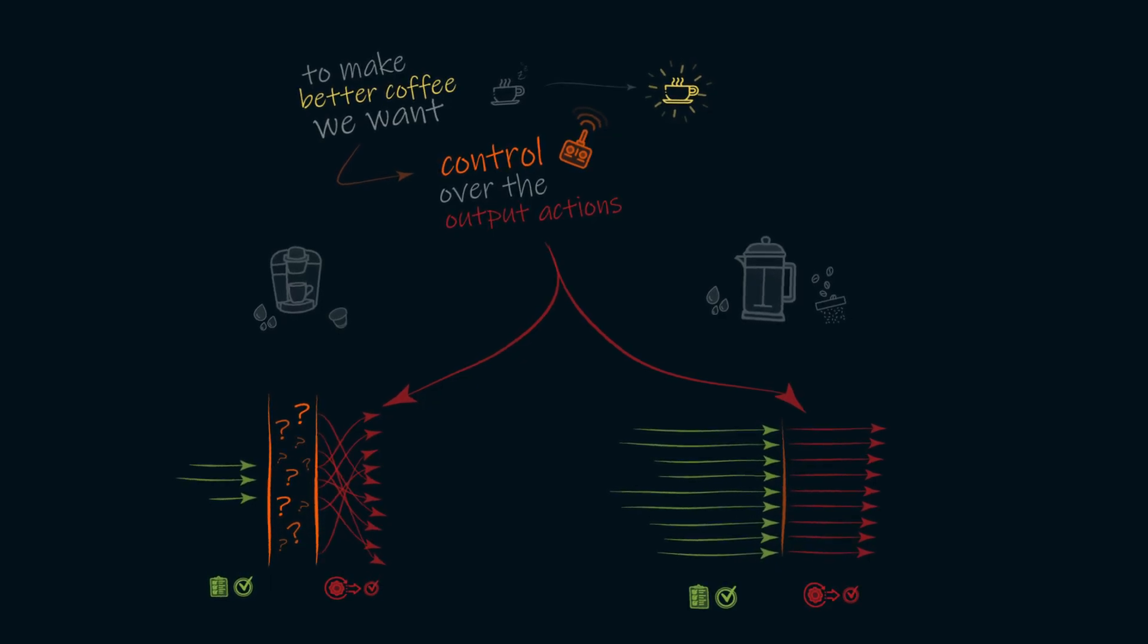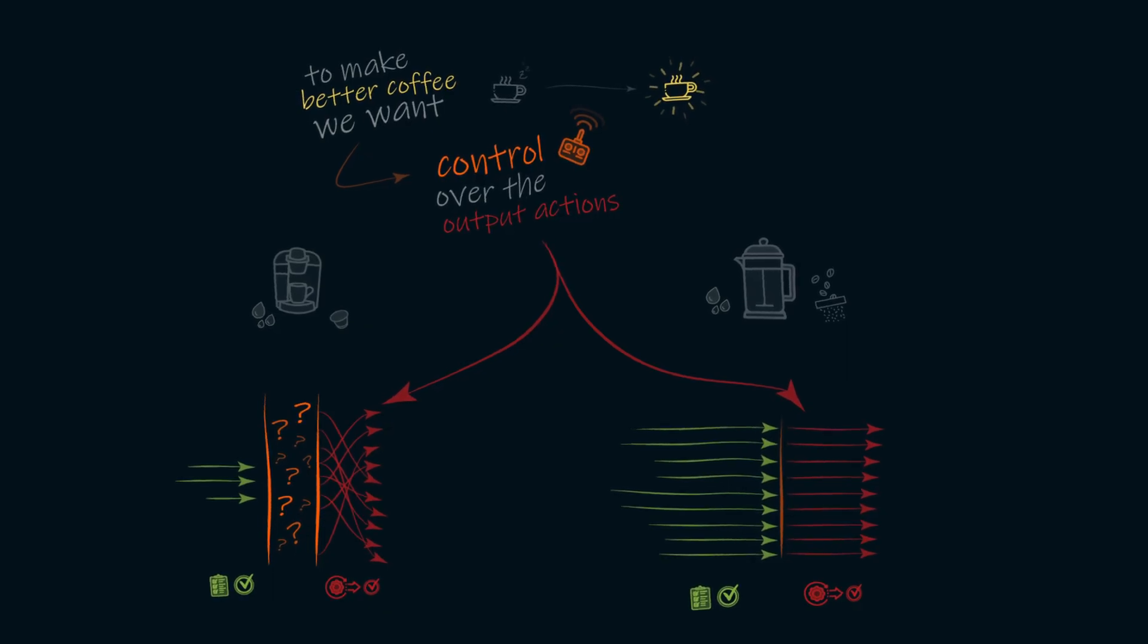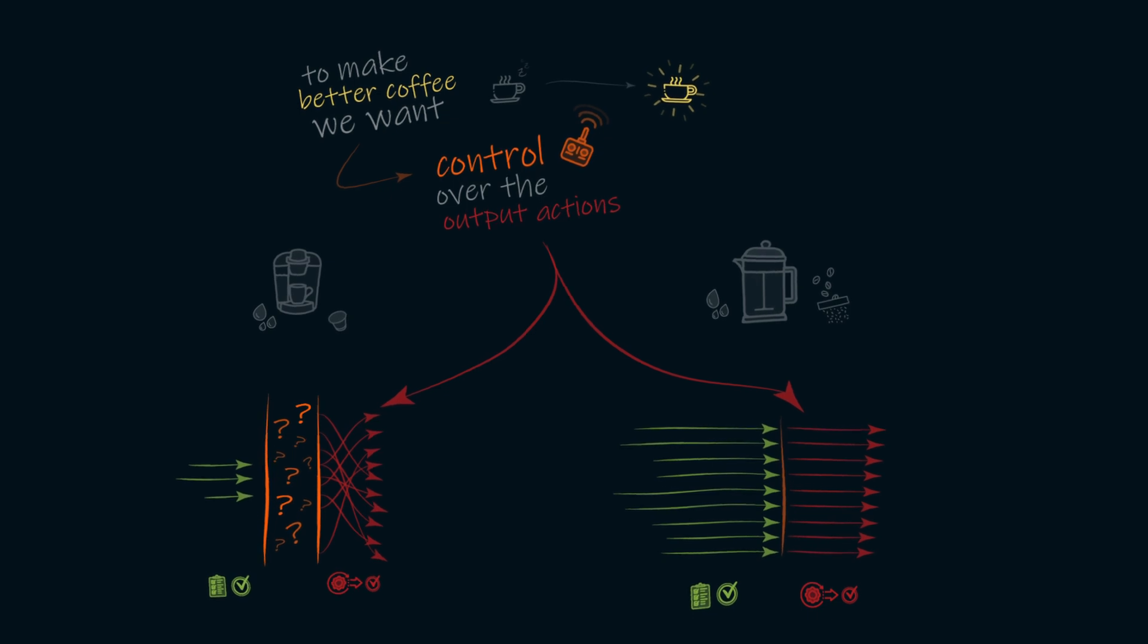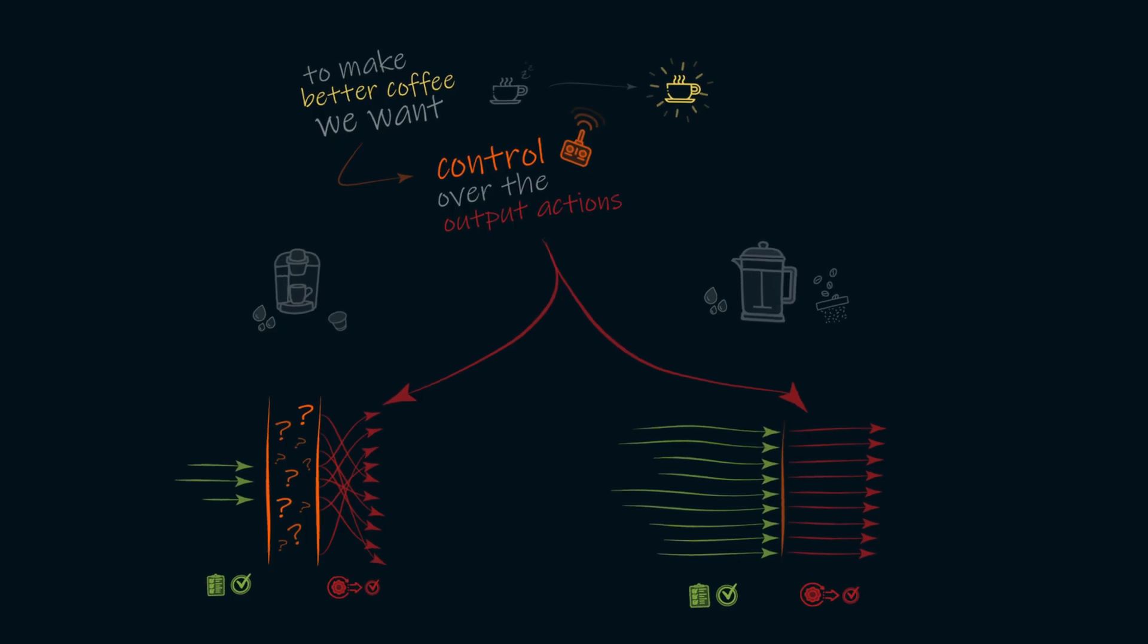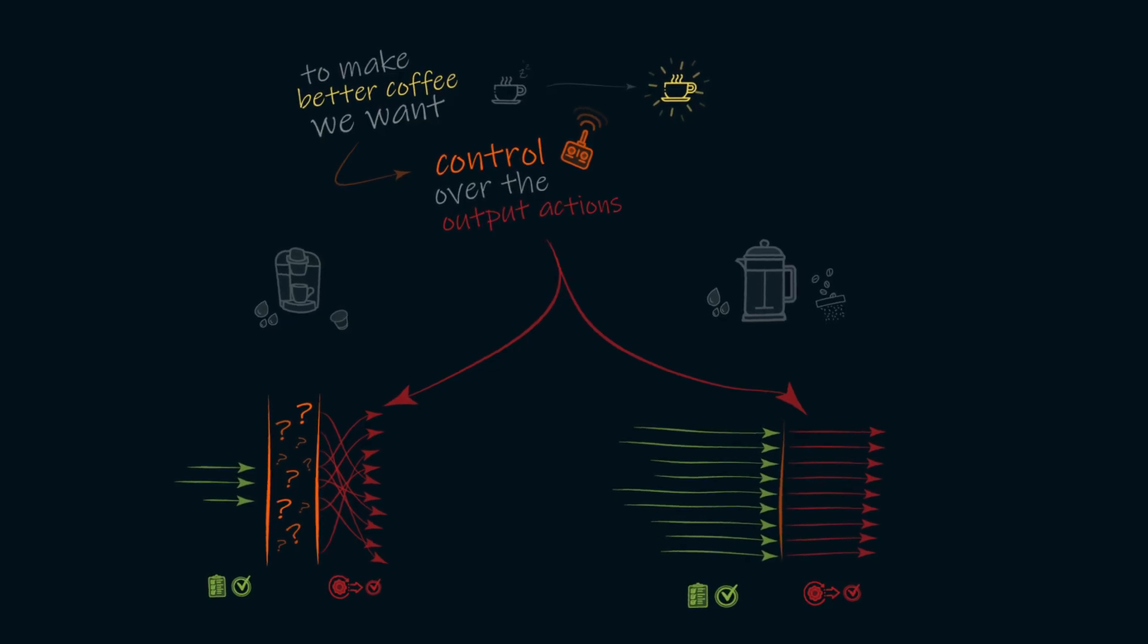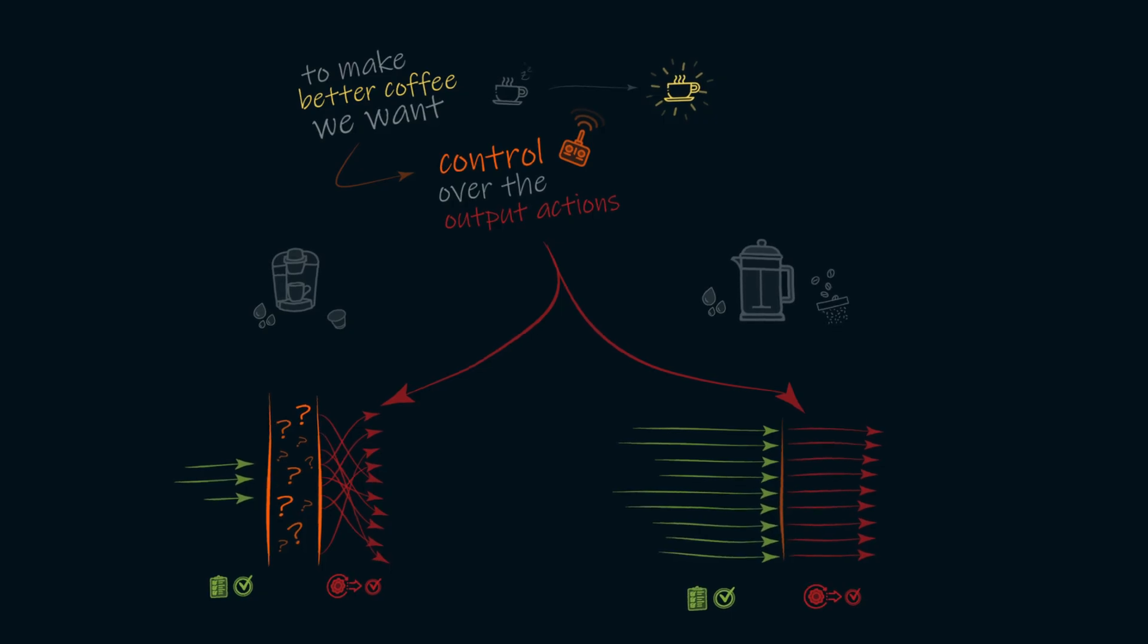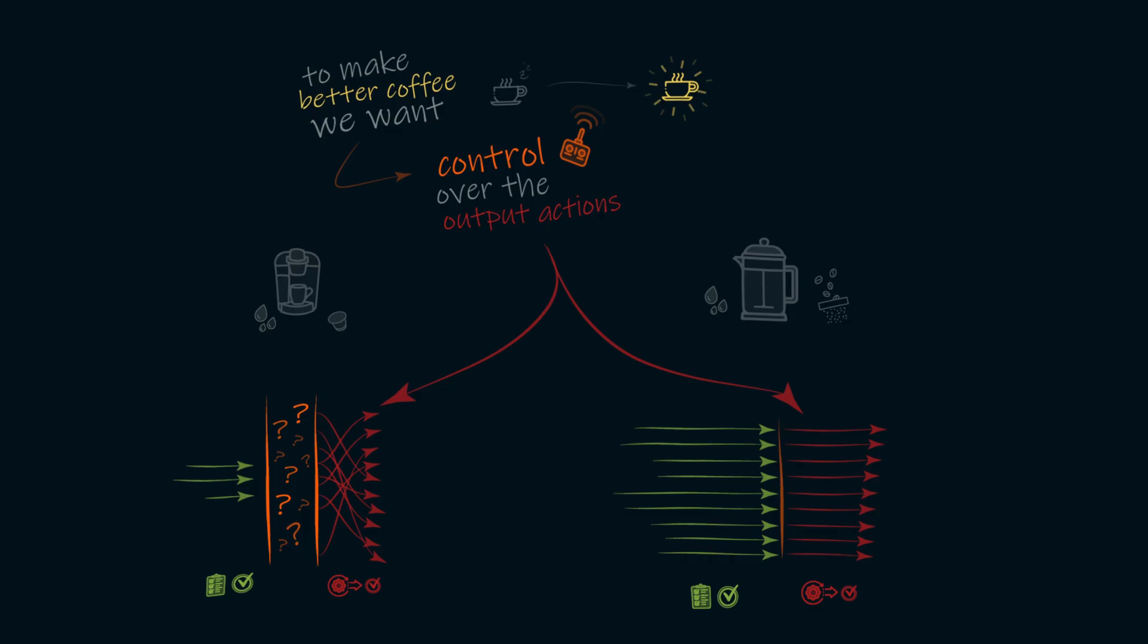And on the other hand, if we were to use the French press and wanted the exact control over the output, we can see now that it's incredibly easy to do. Because our input actions are the exact same as our output actions, we just need to do exactly what we want to have happen. So if we want to have the water a bit hotter, we might just leave it on the stove for another minute. And if we wanted fewer grounds, we could just add fewer when we measure the grounds ourselves.